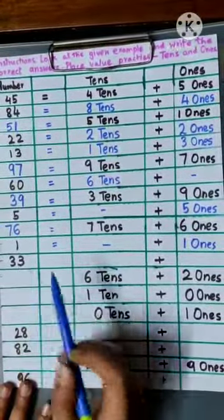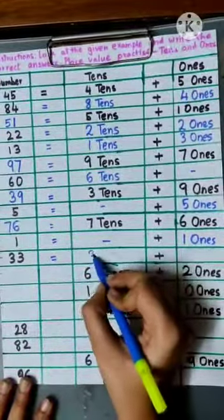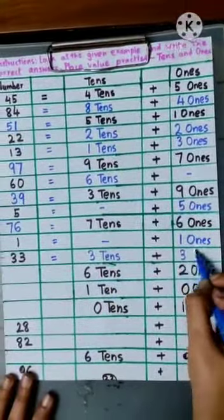Next is number 33. That means 3 tens and 3 ones.